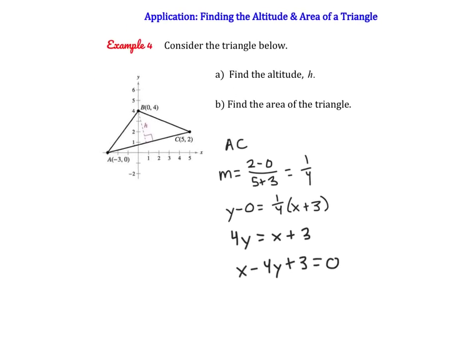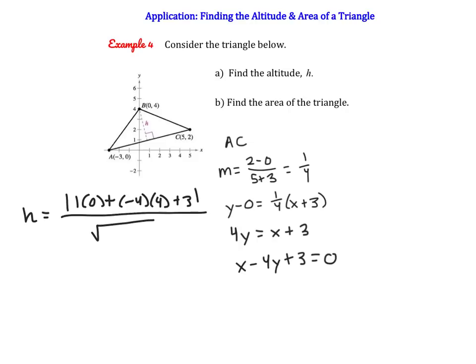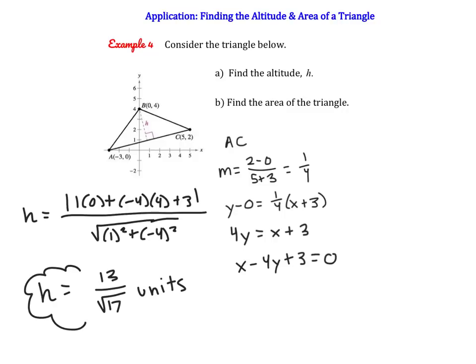Now we have the equation of AC and the point B at (0, 4). I'll call it H for altitude instead of D, since that's what we're actually finding. So: H equals the absolute value of 1 times 0, plus negative 4 times 4, plus 3, all over the square root of 1 squared plus negative 4 squared. Simplifying, we get 13 over the square root of 17 units. We'll leave it unrationalized for now since we'll use it in part b.